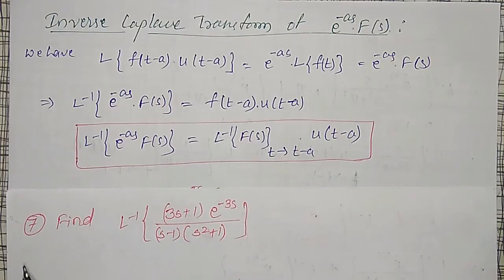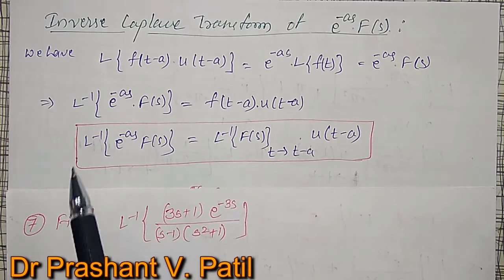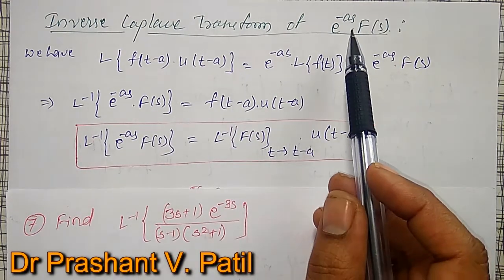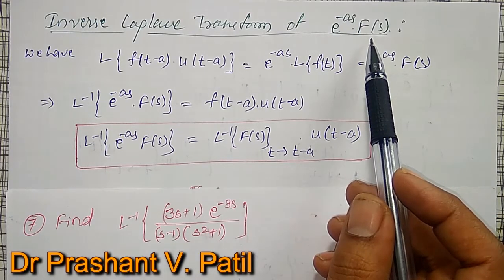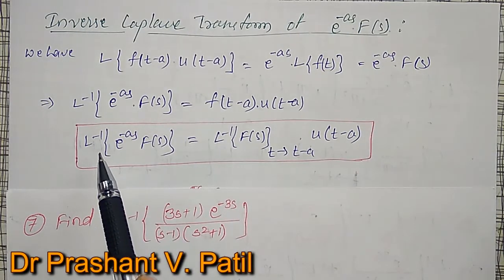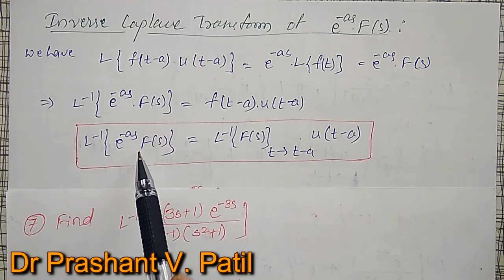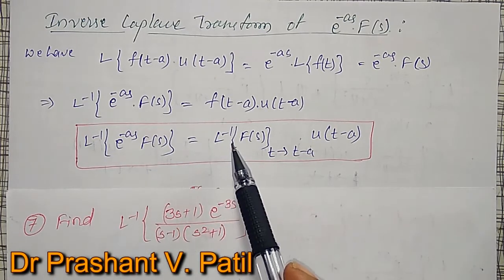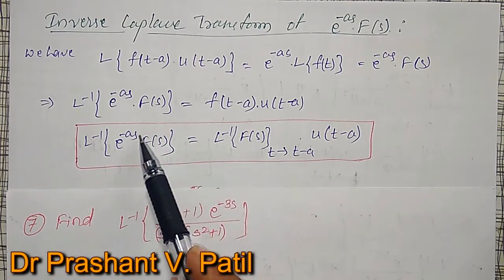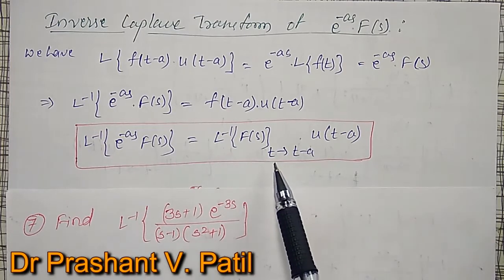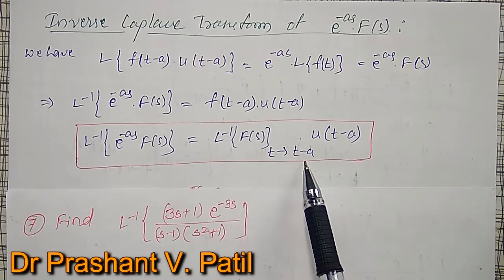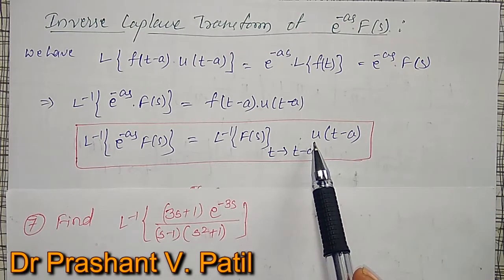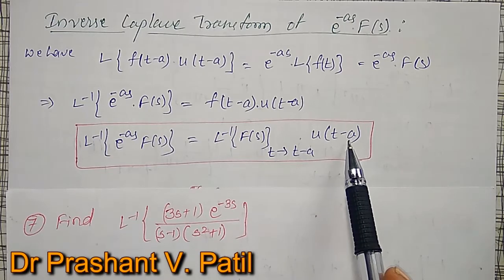One more example on inverse Laplace Transform of e to the power minus a·s into F(s) type I am going to do. Its inverse Laplace Transform of e to the power minus a·s into F(s) is given by the inverse Laplace Transform of F(s), where you replace t by t minus a, and multiply by the unit step function u(t minus a).